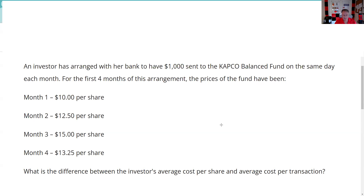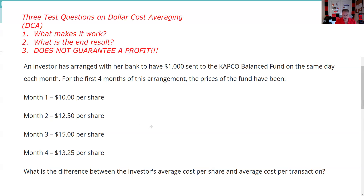An investor has arranged with her bank to have a thousand dollars sent to Capco Balanced on the same day each month. As a test taker, we should recognize that when we have fixed dollars invested regularly, this is probably going to be about dollar cost averaging. Dollar cost averaging is very testable on all of your exams, and there are three test questions on it.